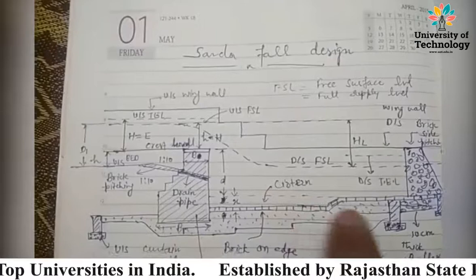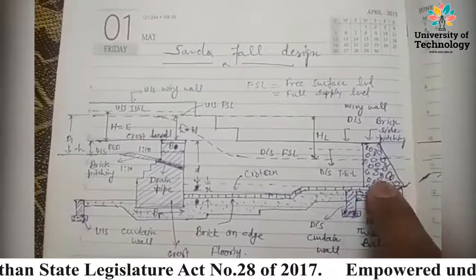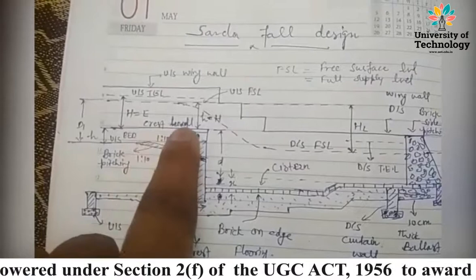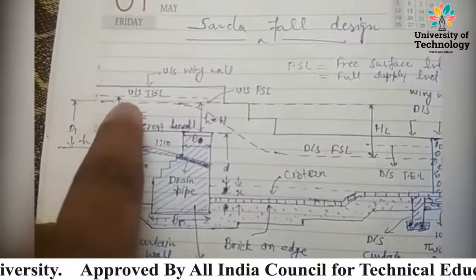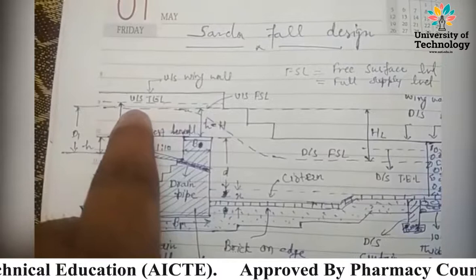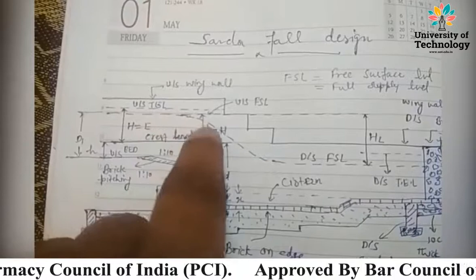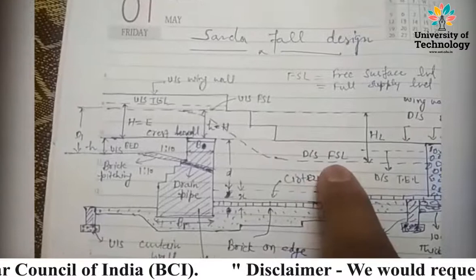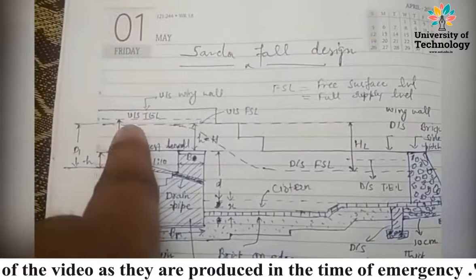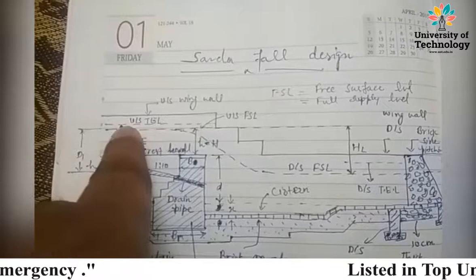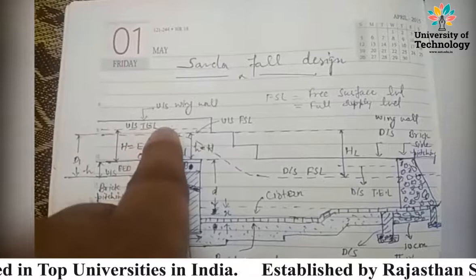You can see here the brick side pitching. In another portion, this is the crest wall. This is the upstream bed level. There are two lines you can see here: this line is known as the upstream FSL — the full supply level of the canal — and after this shape we get the downstream FSL. This is the full supply level on the downstream side. Above this FSL, a line is also given which is the imaginary line known as the upstream total energy level.